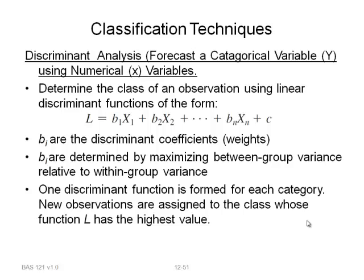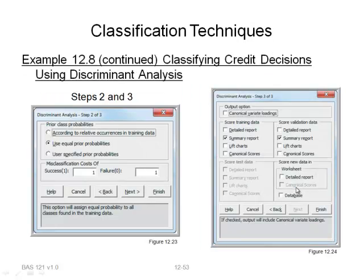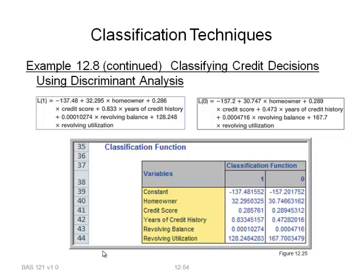Discriminant analysis determines the class using linear discriminant functions. The B1 values are the discriminant coefficients or weights — we're weighting each variable, and it's a linear function. One discriminant function is formed for each category. In XLMiner, go to classification, then discriminant analysis. Input your variables, select decision as your output variable. For prior class probabilities, use the prior probabilities. Set misclassification costs to 1 for success and 1 for failure — weighting them equally. Request a summary report and a score validation report.